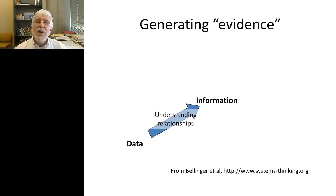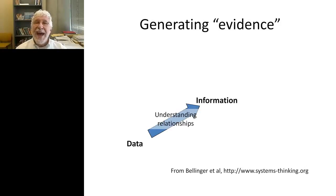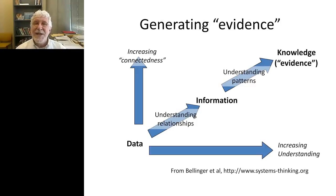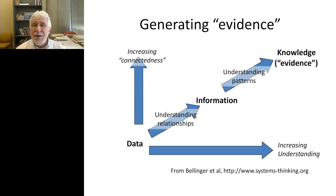So what we really want to be doing from all of this large collection of data is translating that data into information. To do that, we need to understand relationships between the data themselves, and more importantly, we want knowledge or evidence — allowing us to not only understand those relationships, but what are the patterns of those relationships and how do they change over time. I'm going to spend the rest of my talk discussing how we're approaching the problems of understanding relationships and patterns and applying those to the cancer problem.